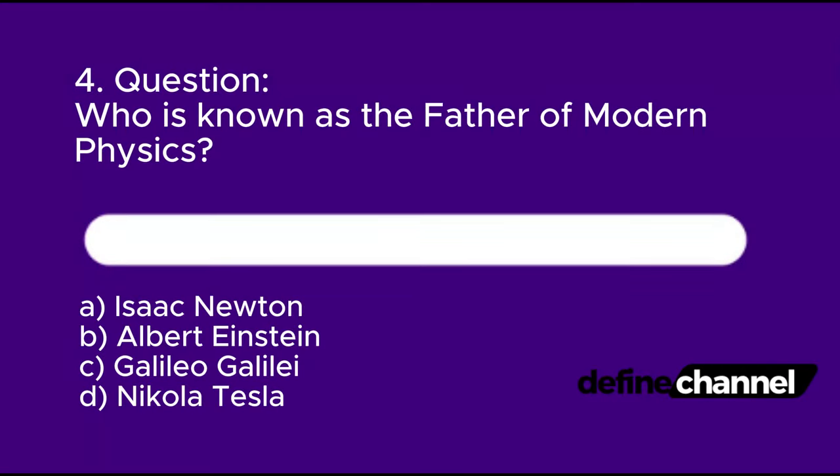Question 4: Who was known as the father of modern physics? A. Isaac Newton, B. Albert Einstein, C. Galileo Galilei, D. Nikola Tesla. Please determine which is the correct answer.